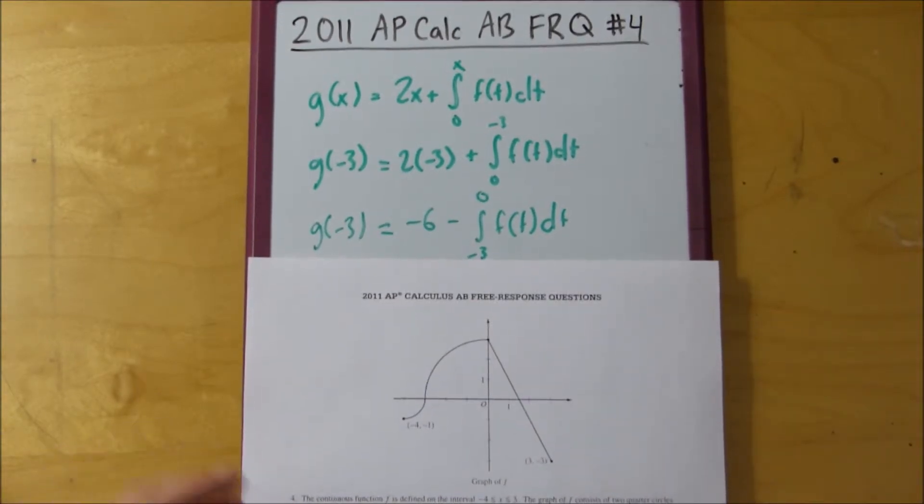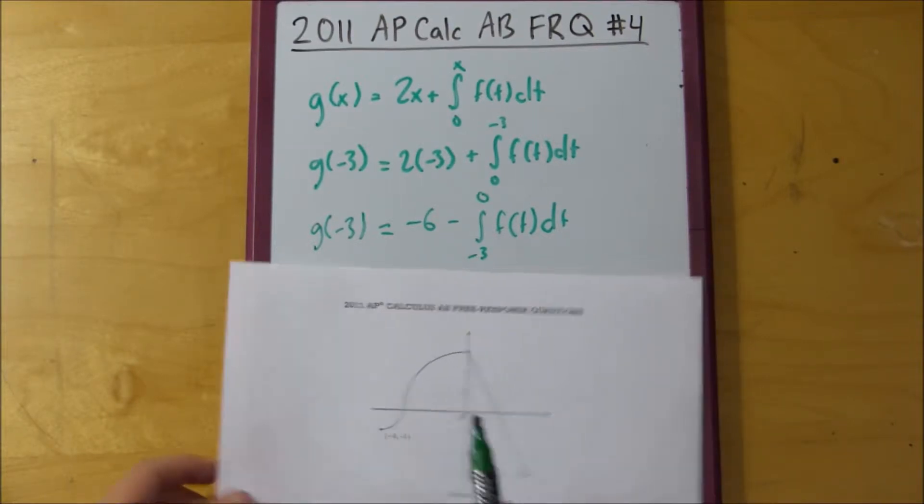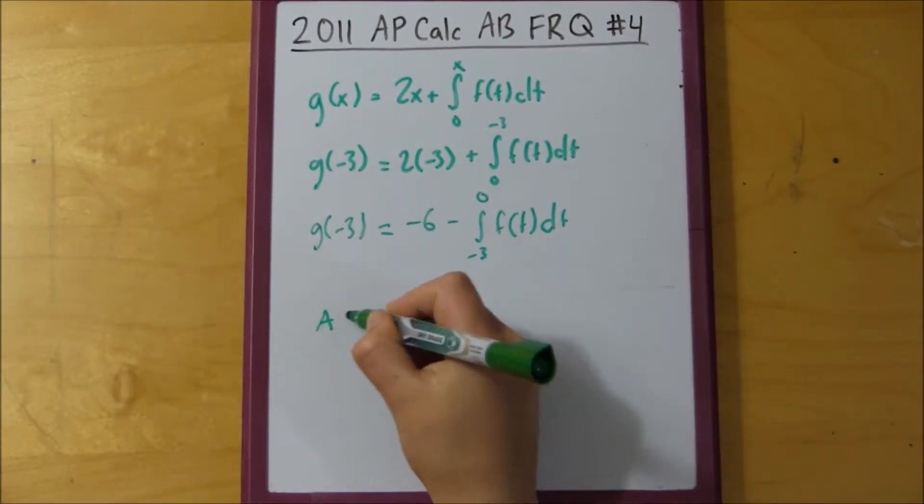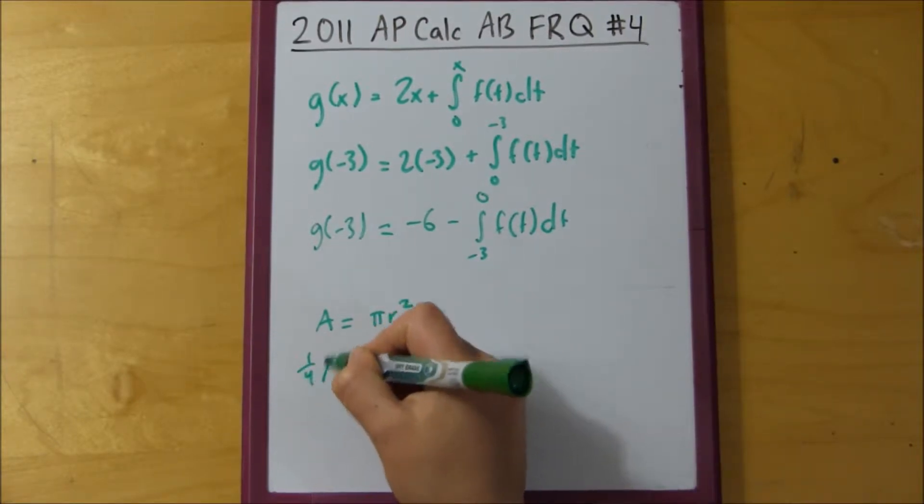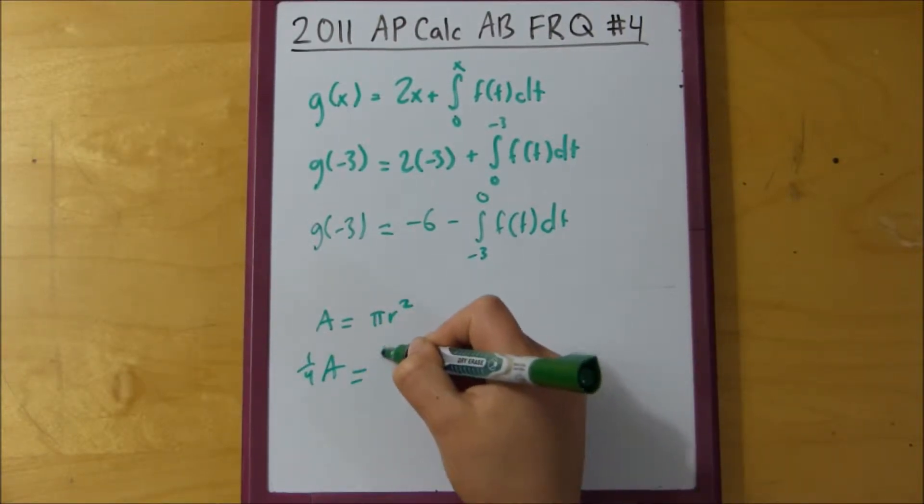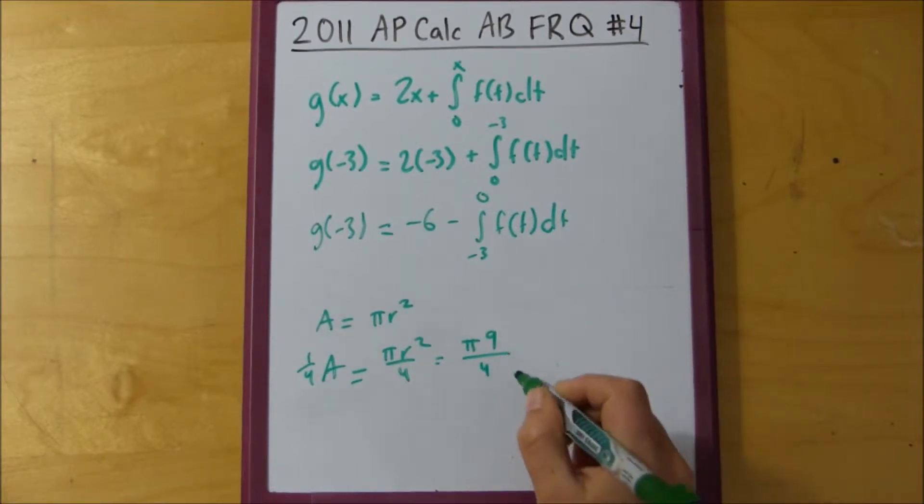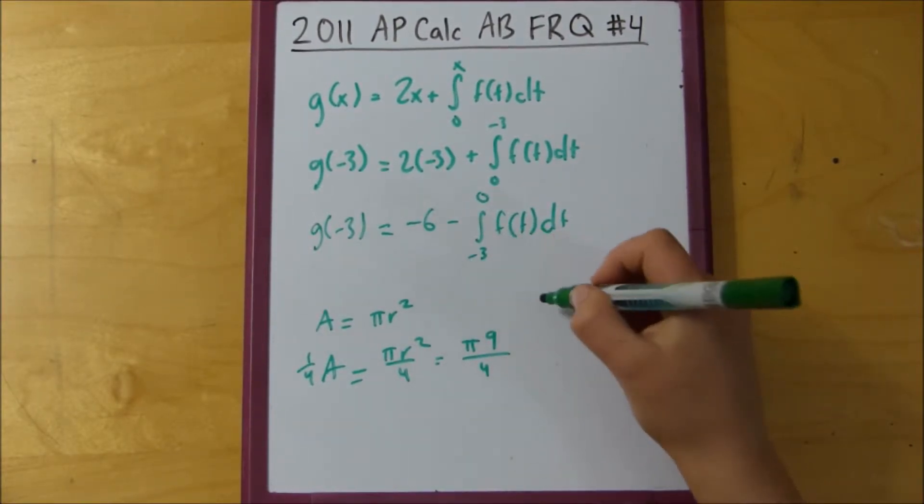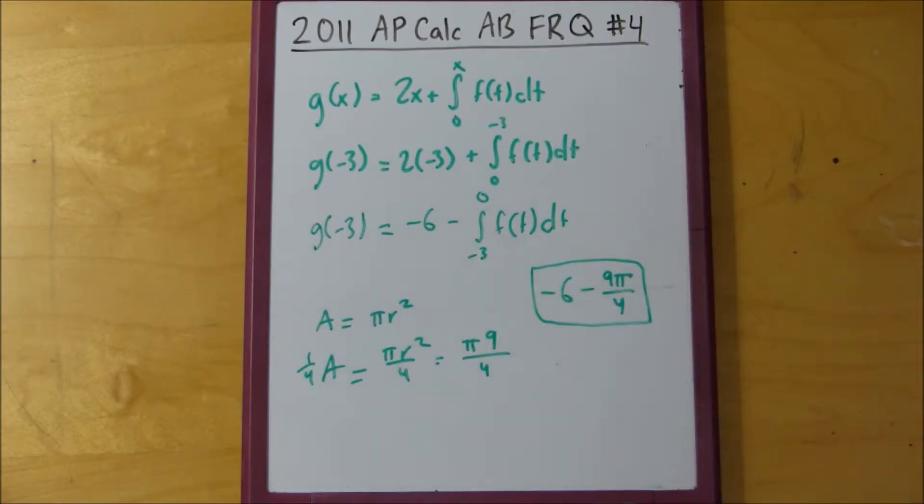So then we just go to the graph of f and we find the area from negative 3 to 0 and it looks like it's a quarter circle. So, it's radius is 1, 2, 3 and we know that the area of a circle is the same thing as pi r squared. And since this is a fourth of the area, it's going to be pi r squared divided by 4, so 9 pi over 4. And then since we have our negative 6, it's going to be negative 6 minus 9 pi over 4 and that is g of negative 3.